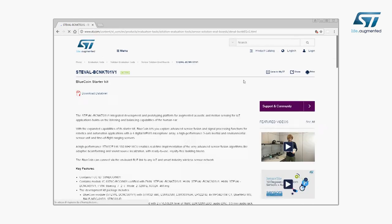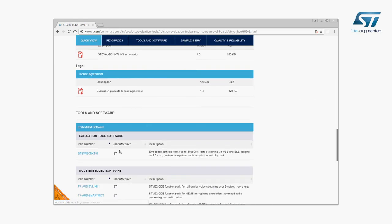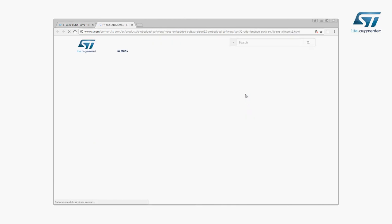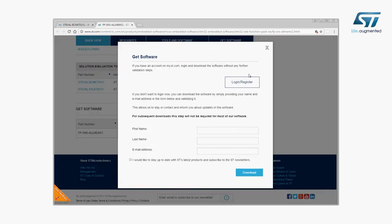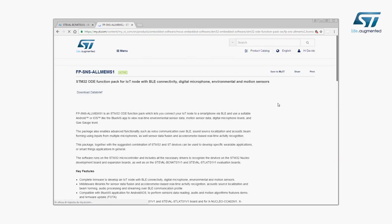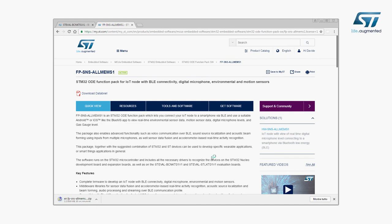Go to st.com slash BlueCoin. From the list of compatible software choose the AllMems1 function pack. Go to the end of the page and click on the download button in the get software section. Extract the zip file and you will find the directories with all the required material.